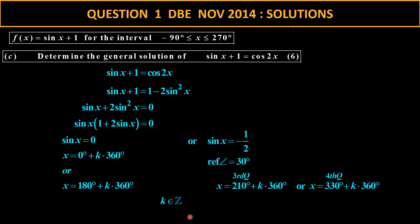Then we take sine of x equal to negative one half. We get the reference angle of 30 — don't use the negative to get the reference angle. Sine is negative in the third quadrant and the fourth quadrant. The third quadrant gives 180 plus 30 which is 210, and the fourth quadrant gives 360 minus 30 which is 330. There we have the general solution.